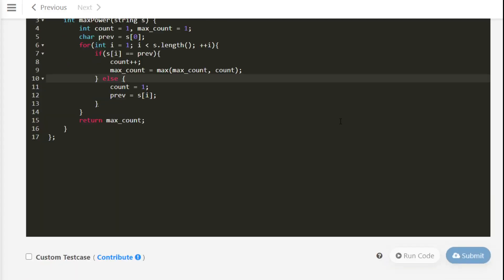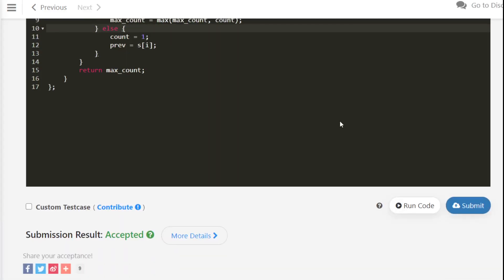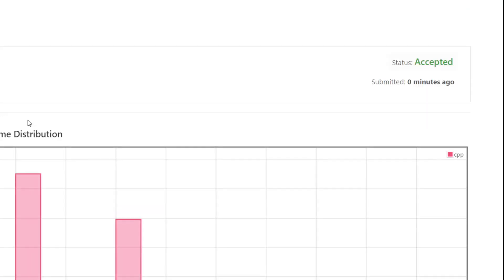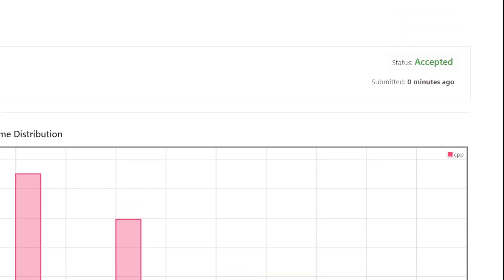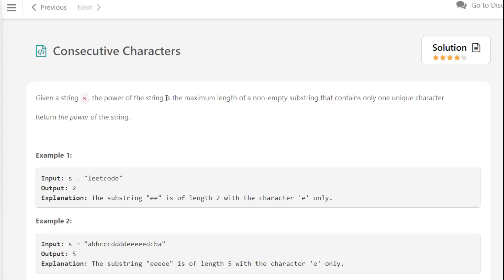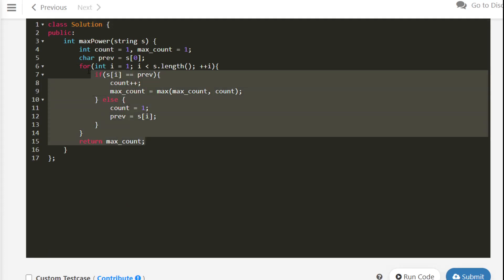And now it's accepted. And if we look at the time, we are right here, better than 100 percent of submissions, and it takes 0 milliseconds. So we are in great shape. Now let's do the same thing in Java and Python, so it should be very straightforward.